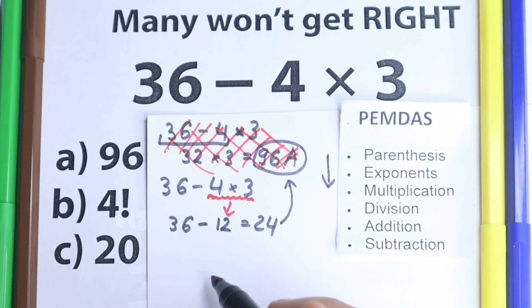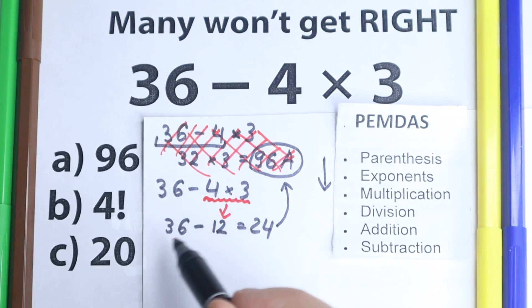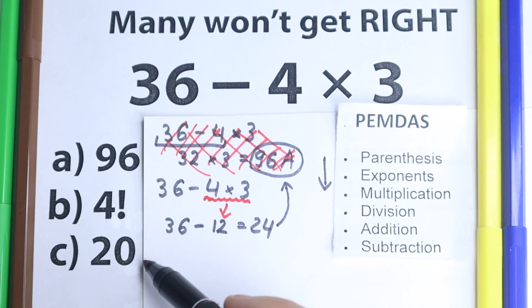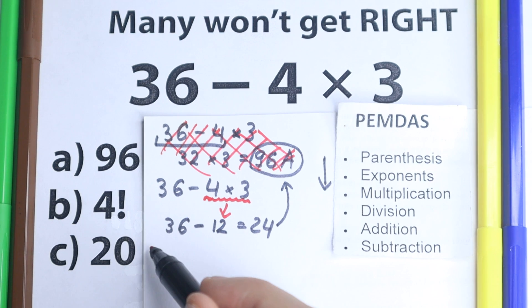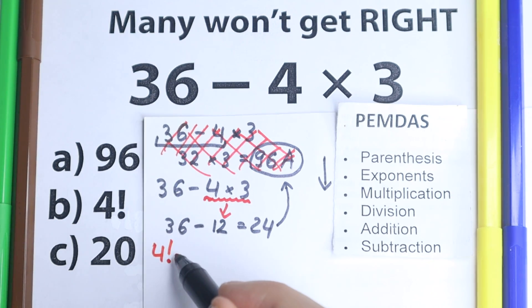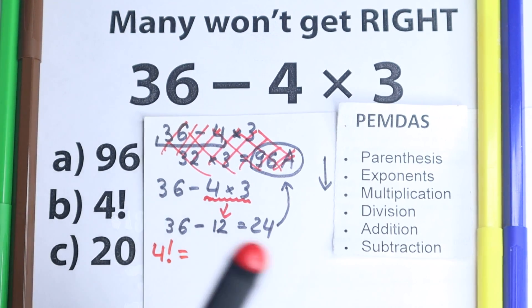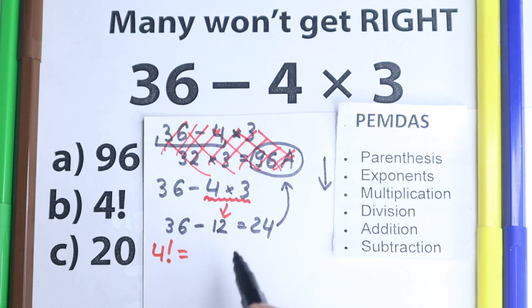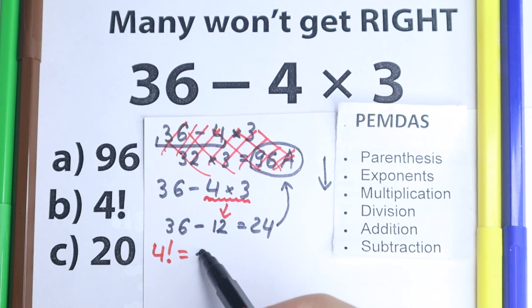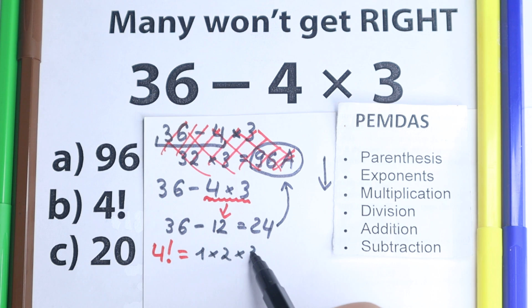But what about an option right here? We need to find this correct option, we have 96, this is not good, we have 20, this is not good. What about this 4 factorial? We need to know from school that this factorial is a product from 1, 2, 3, 4. In our case, so 1 times 2 times 3 times 4.